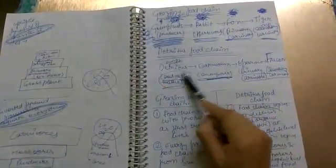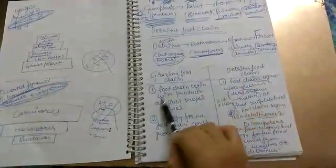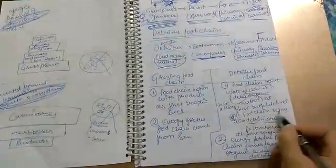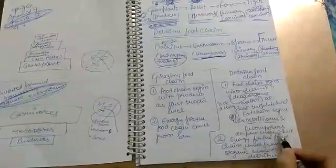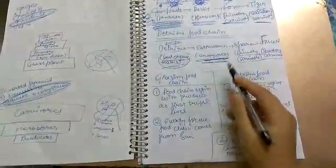Detritus food chain: detritus to earthworm to sparrow to falcon. What is the difference between grazing food chain and detritus food chain? Food chain begins with producers as first trophic level in grazing, begins with detritus and decomposers in detritus food chain.